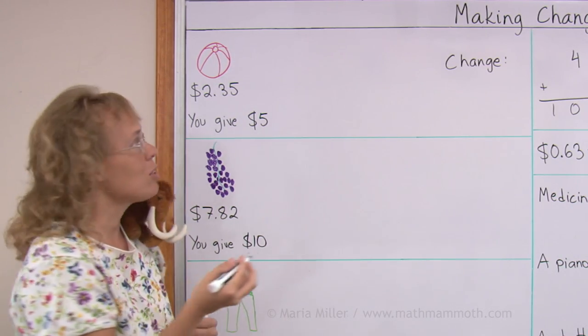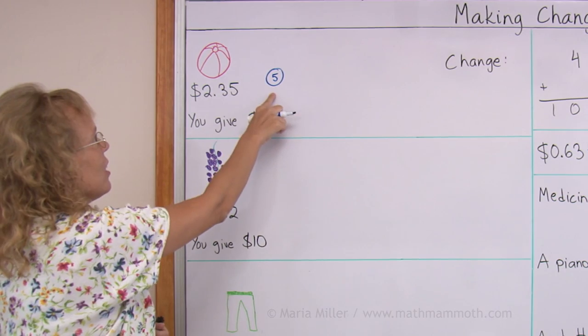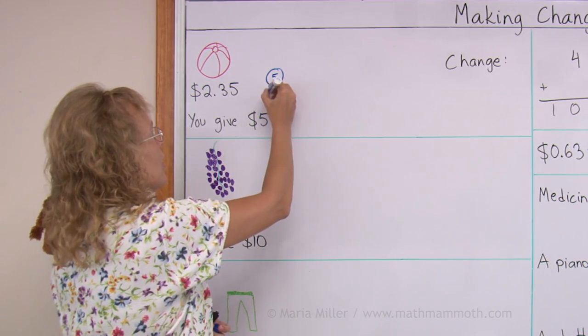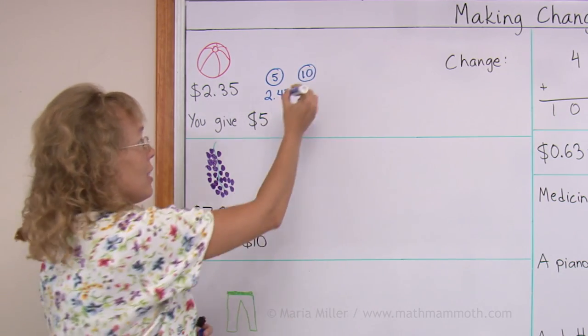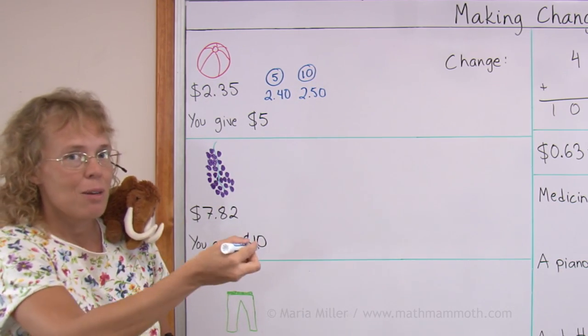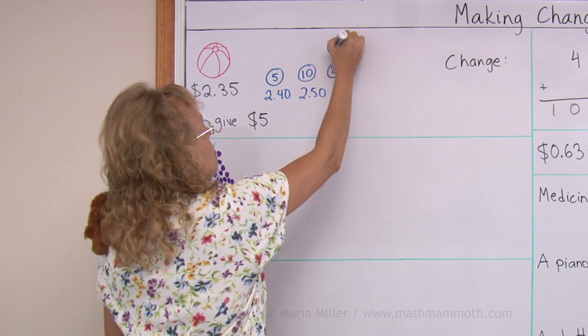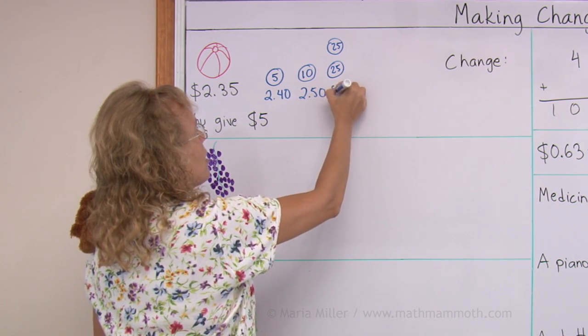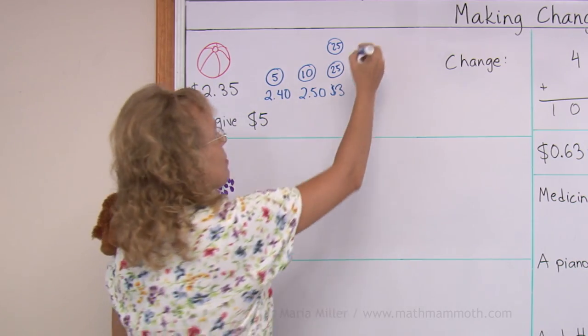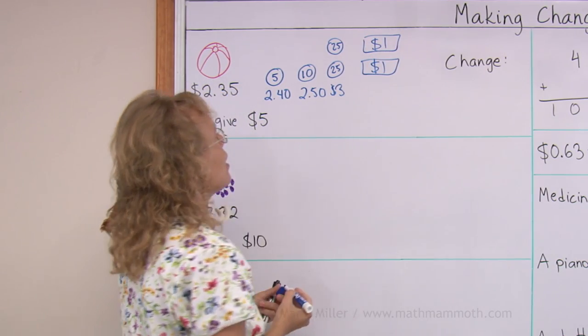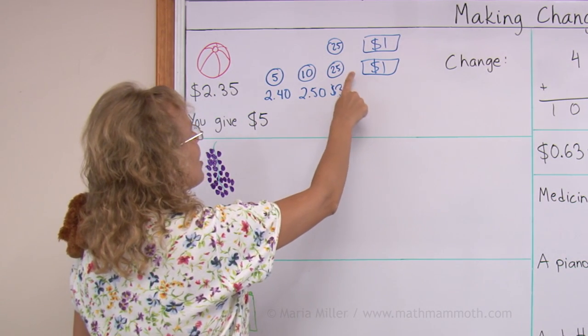I basically think of the coins I would use. For example, $2.35, let's say that I add 5 cents to that. Then I would have $2.40. After that I would add 10 cents, and after that I would have $2.50. And then I go up. I want to go to the next whole dollar to $3.00. So I'll take two quarters, and at that point I am at $3.00. And then from $3.00 to $5.00 I need $2.00. And so all those coins and bills I drew is your change. So the change will be $2.65.